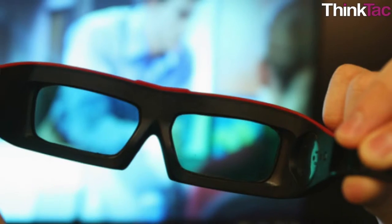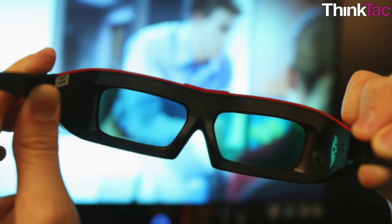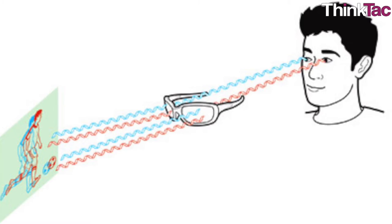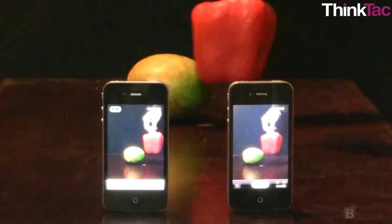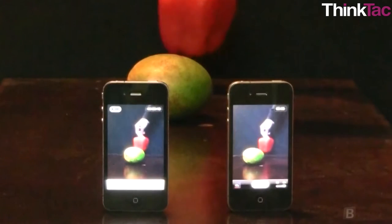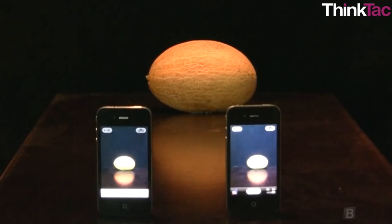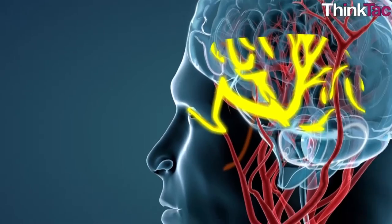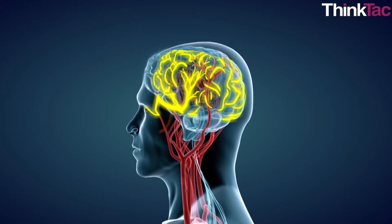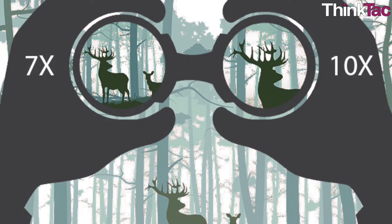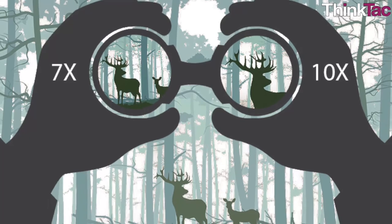Binocular vision is what allows us to watch movies in 3D. The 3D glasses filter light to allow only a specific type to enter each eye. The 3D movie is shot in two slightly different views with two cameras, and each eye is allowed to see one view. This permits the brain to reconstruct the image in 3D. Binocular vision also allows us to visualize stereograms and other 3D images.